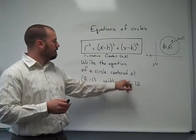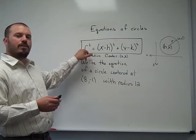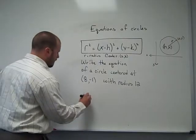Our radius is 12, and the equation says that it's r squared equals, so we would do 12 squared.